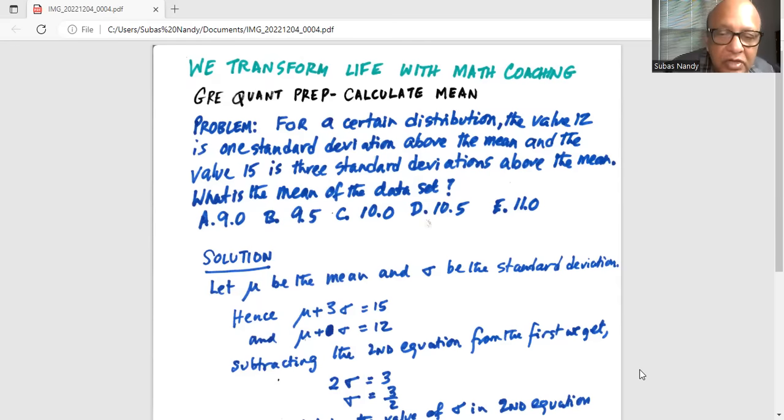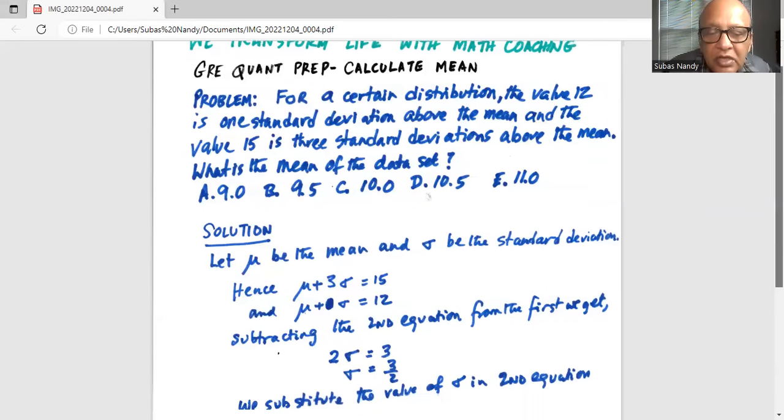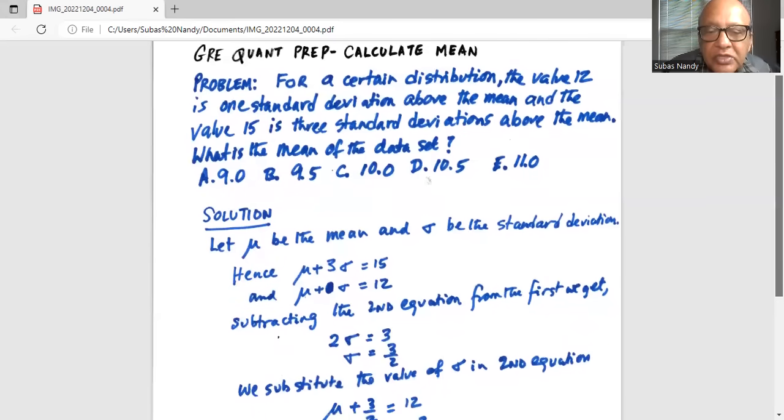Now if we subtract the second equation from the first, on the left hand side we get mu and mu cancel, and three sigma minus sigma is two sigma, and 15 minus 12 is equal to 3. Dividing by two on both sides, sigma, which is the standard deviation, is three over two.